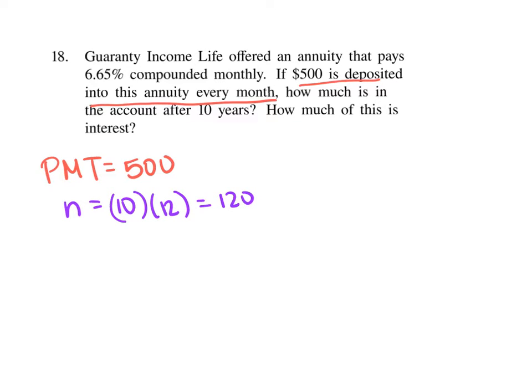And then my i, periodic interest rate, I'm compounding it monthly. I'm doing 0.0665, I'm going to divide that by 12. And I get a periodic interest rate of 0.0055 and a whole bunch of other numbers.